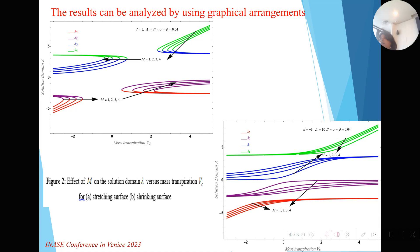These are the graphical results of my present work. We analyze the stretching and shrinking surface with the lambda solution domain, comparing four roots — two real roots and two complex roots, or two negative. Lambda 1 and Lambda 2 are the real roots; Lambda 3 and Lambda 4 are the complex roots. The first graph represents the stretching surface and the second graph represents the shrinking surface, showing how the flow moves in these two surfaces.